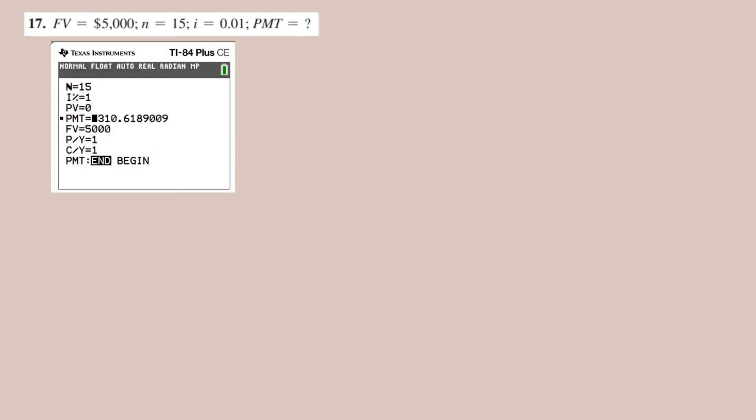If the future value is given, and n and i are known, if we want to calculate the value for the payment, we can simply use that in a graphing calculator. Enter the values, move our cursor to payment, and then select second enter to calculate the answer. So if you are trying to find the answer, that is $310.62.